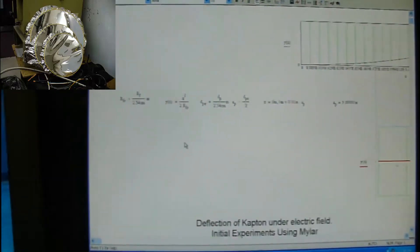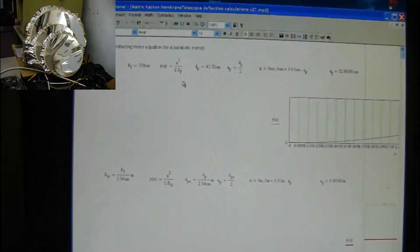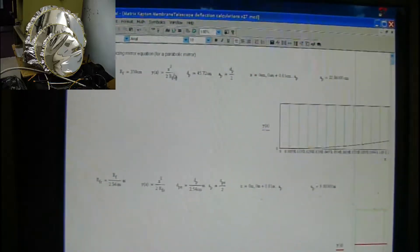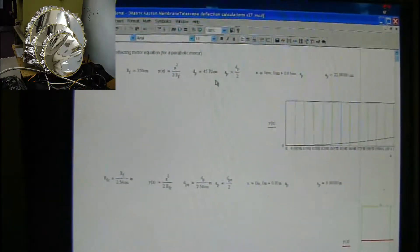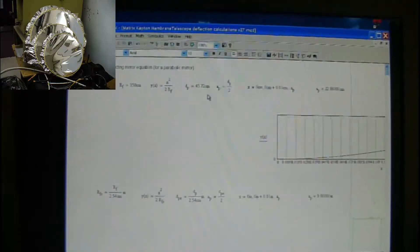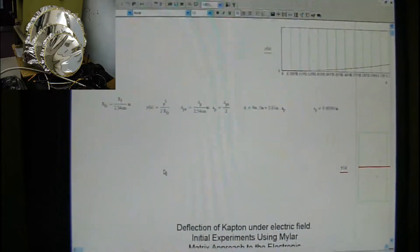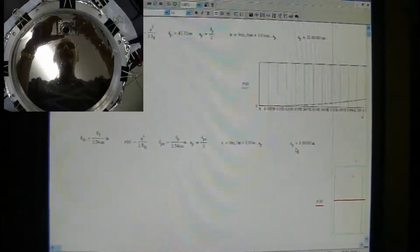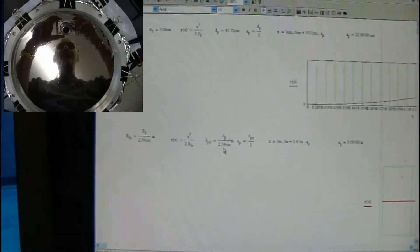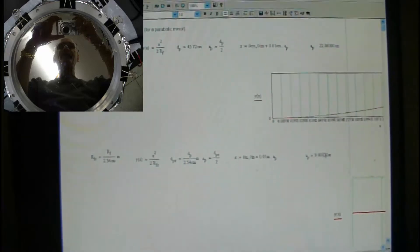Now, we did some of these RF is 350 centimeters. Of course, calculating for a parabolic mirror is Y of X equals X squared over 2 times RF. The DP, which is 45.72 centimeters. AP, and I do have it defined somewhere. DP is the diameter of the mirror. Which is basically 9 inches, or actually 18 inches. 45 is going to be 18 inches. AP is the radius.